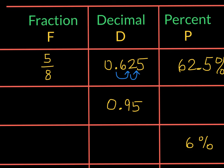In the second row, we have 0.95. The equivalent percent would be 95%. The fraction would be 95 over 100. And if we divide the numerator and the denominator by 5, we will reduce this to 19 over 20.